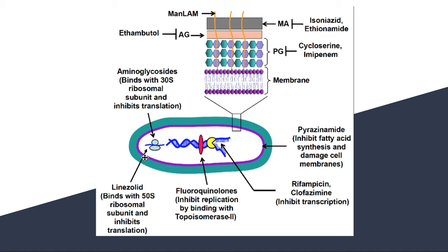Among the second-line drugs, fluoroquinolones inhibit DNA replication by binding to topoisomerase 2 and 4. Linezolid also inhibits protein synthesis. Ethionamide and cycloserine also inhibit cell wall synthesis.